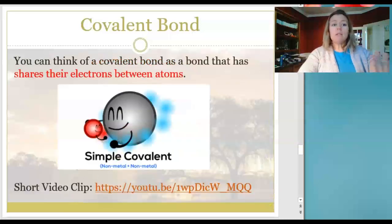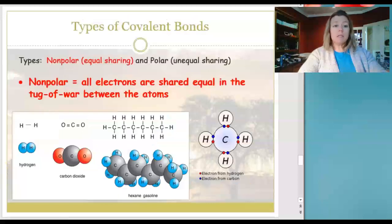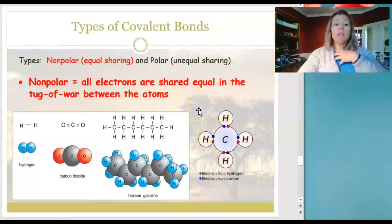Covalent bonds in a nutshell share their electrons. Nonpolar means equal—all of the electrons are shared equally. You can have just two in an equal sharing, three in an equal sharing, or many, many, many, but the point is there are no empty spaces in this parking lot. If you take this molecule and just look at the smaller version, all of the bonds are equally pulling on that carbon in the middle.